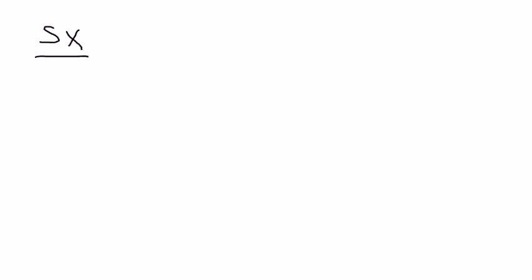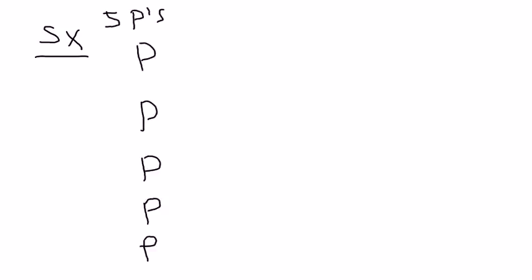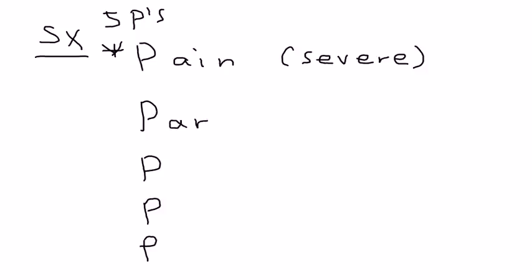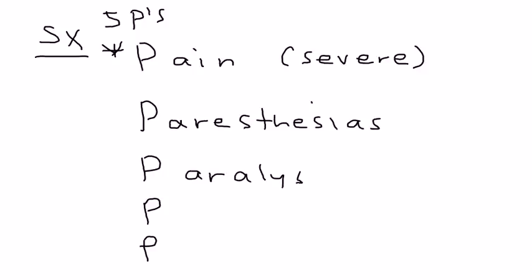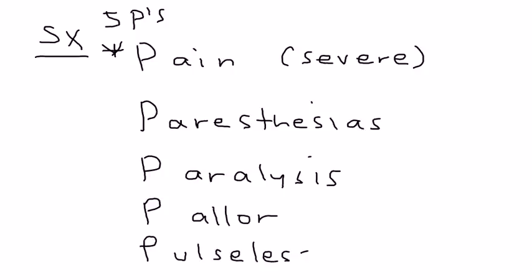If a person presents with a fracture, how do you become suspicious of compartment syndrome before diagnostic testing? There's a mnemonic called the five Ps. The first is pain — specifically severe pain out of proportion to the physical findings. Next is paresthesias, relating to sensation such as a pins-and-needles feeling, perhaps paralysis, pallor, and pulselessness. Absent pulses are a very late and severe sign.